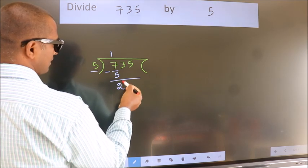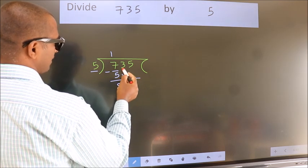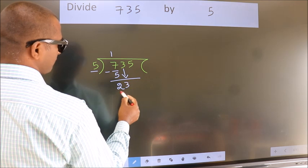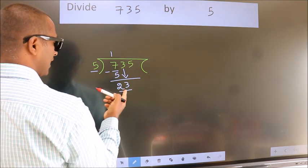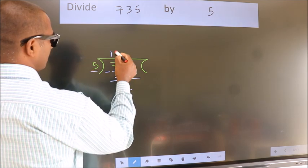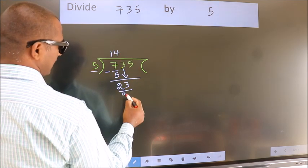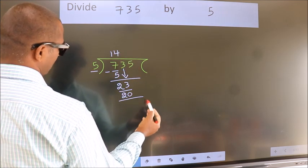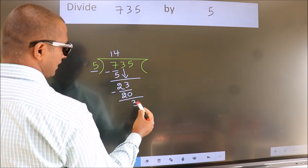After this, bring down the beside number. So 3 down, so 23. A number close to 23 in the 5 table is 5 fours is 20. Now we subtract. We get 3.